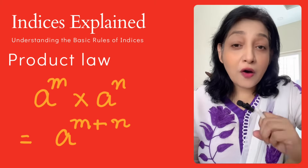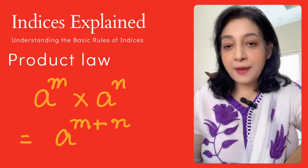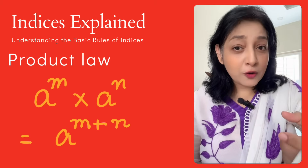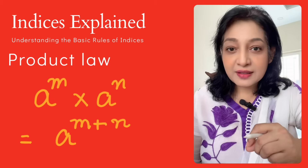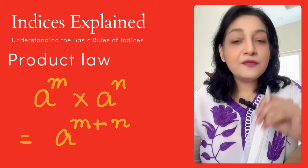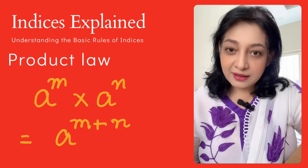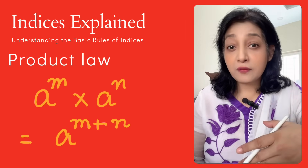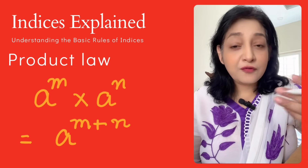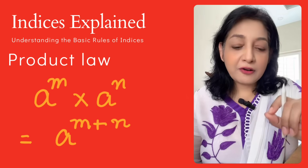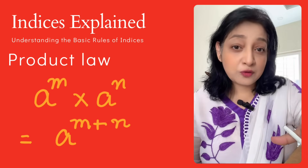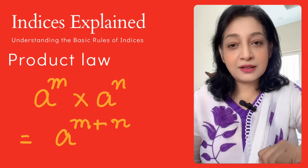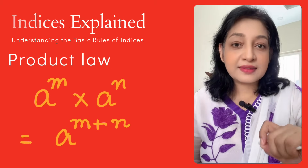Number one: the product law. For example, a raised to power m multiplied by a raised to power n — what we do is add the powers. When the base is the same, we add the powers: m plus n. If we have 2 raised to power 3 multiplied by 2 raised to power 4, the bases are the same, so we get 2 raised to power 3 plus 4 equals 2 raised to power 7.